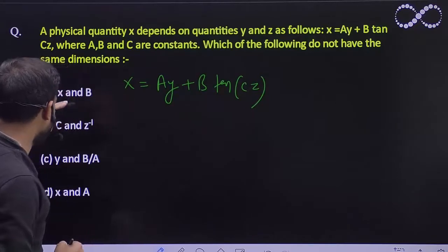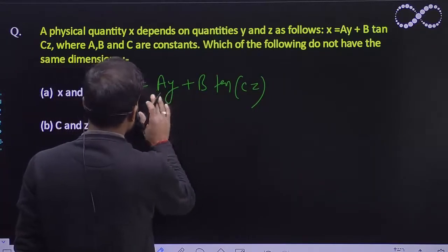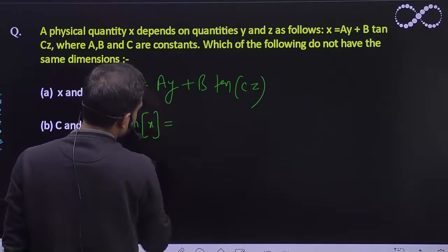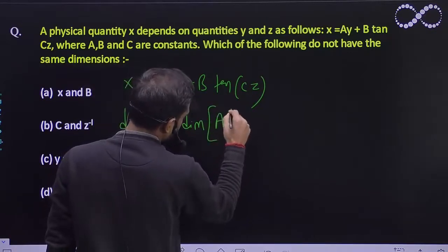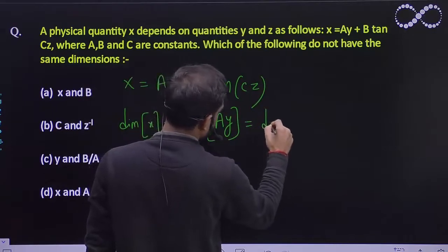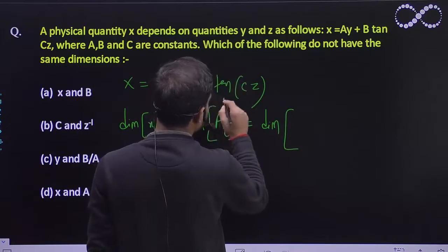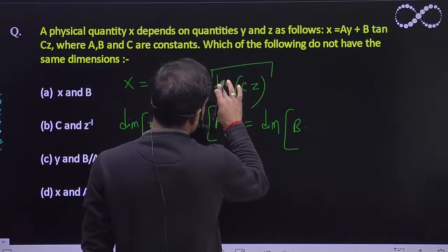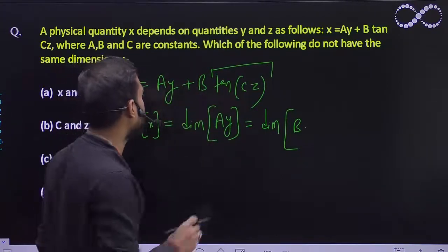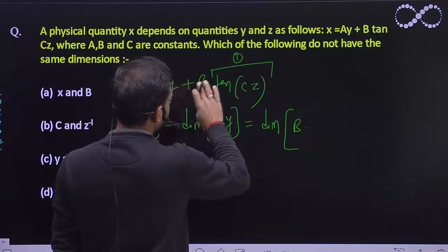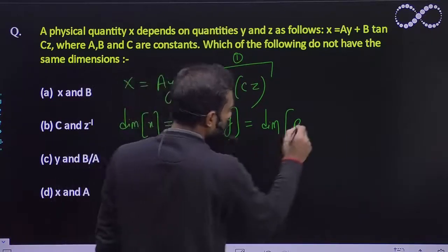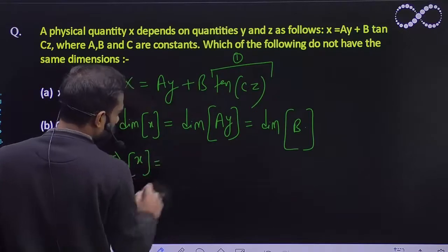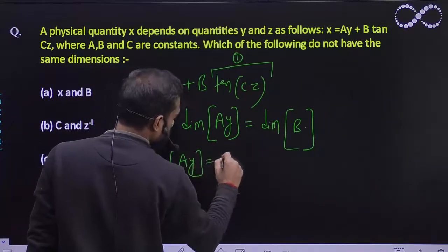We need to find which pair does not have the same dimension. From the equation, the dimension of x must equal the dimension of a·y, and that must equal the dimension of the next term b·tan(cz). Since tan is a trigonometric ratio, it has a dimension of 1. So the whole term has the dimension of b only. Therefore, dimension of x equals dimension of a·y equals dimension of b.